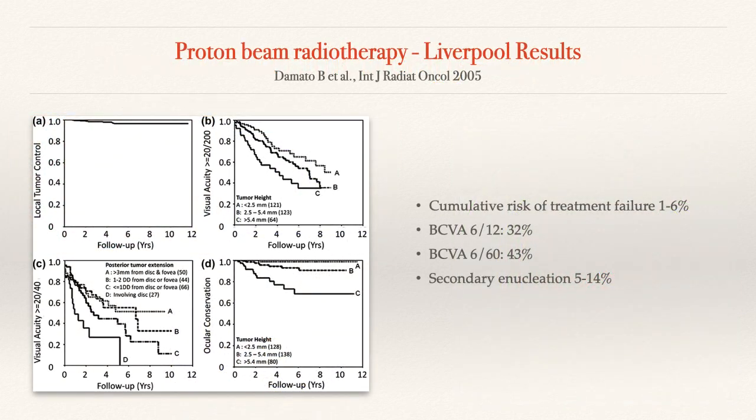Proton beam works exceptionally well and the rate of poor tumour control is very low. However, just as with plaque radiotherapy, the larger the tumour the less likely you are to keep good vision. With larger tumours there is a chance of subsequently needing enucleation due to complications and side effects from the radiotherapy, so the secondary rate of losing the eye is a lot higher than with plaque radiotherapy.